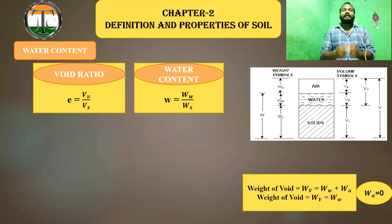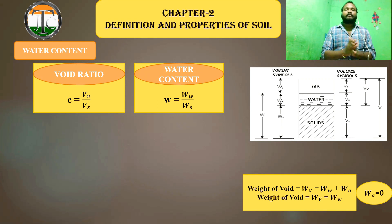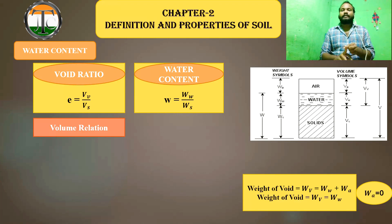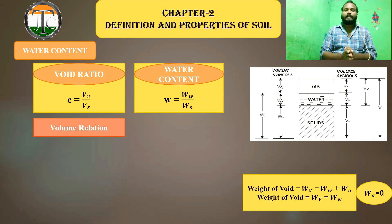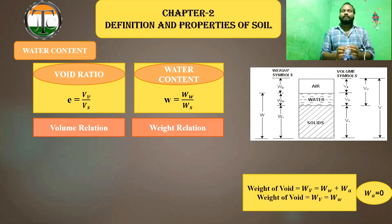We have to calculate the water content as the ratio between the weight of water to the weight of solid — that is the comparison of where the water is relative to the solid. The void ratio is a volume relation. Degree of saturation, air content, porosity, and percentage air void — these are the four properties that are volume relations. But in the case of water content, it is a weight relation.